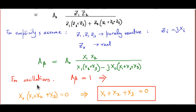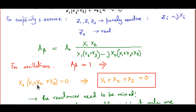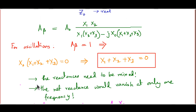The three reactances of the tank circuit components must vanish when added together. They cannot all be of the same kind — there must be either two capacitors and an inductor, or two inductors and a capacitor. Since these reactances are frequency dependent and do not depend on frequency in the same way, the net reactance vanishes at only one particular frequency — the frequency at which this circuit will oscillate.